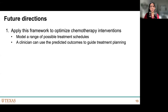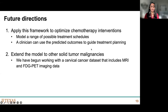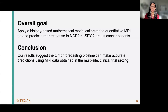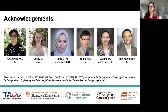Future directions include applying this framework to optimize chemotherapy interventions by modeling a range of possible treatment schedules to guide treatment planning. We are also looking to extend this model to other solid tumor malignancies — in particular, we've just begun working with a cervical cancer dataset that includes both MRI and FDG PET imaging. In summary, our goal was to apply our biology-based mathematical model to ISPY2 breast cancer patients and predict response to neoadjuvant therapy. Our results suggest we were able to use this tumor forecasting pipeline to make accurate predictions using standard of care MRI data in a multi-site clinical trial setting. Thank you to my lab members and collaborators.